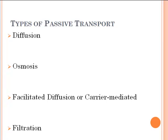The types of passive transport include: diffusion, osmosis, facilitated diffusion (or carrier-mediated diffusion), and filtration. Diffusion is simply the movement of a substance from high to low — substances like glucose, CO2, and oxygen. If it is water that is moving from high to low, it is termed osmosis.